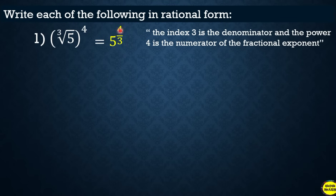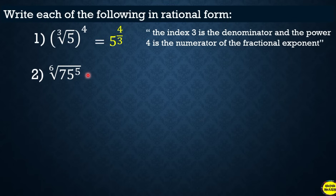Another example: the 6th root of 75 raised to 5. The base is 75, the index is 6 (denominator), and the exponent is 5 (numerator). Therefore the answer is 75 raised to 5 over 6.